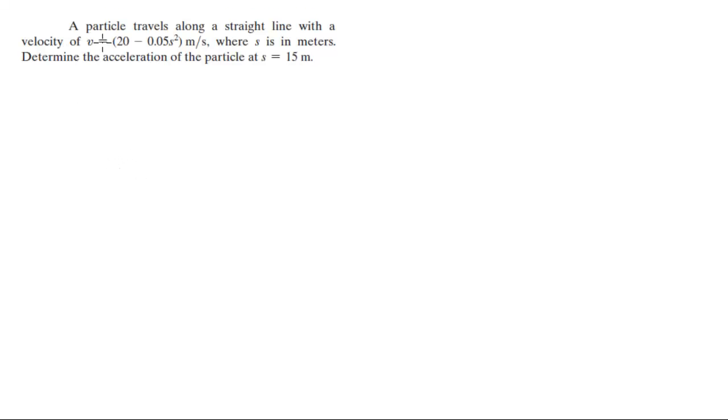Alright guys, let's do this problem that says a particle travels along a straight line with a velocity of v equals 20 minus 0.05s squared, where s is in meters. Determine the acceleration of the particle when s equals 15 meters.